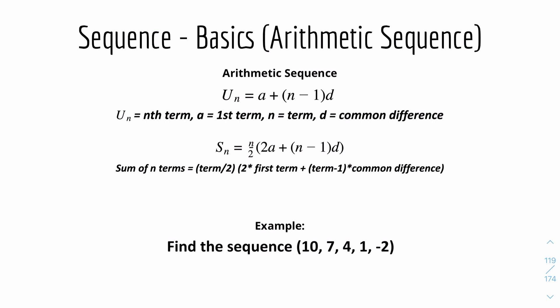For each sequence there's a u-subscript-n and an s-subscript-n. The u-n is basically the nth term — you're trying to find a specific term. The s, however, is basically the sum of the sequence. For an arithmetic sequence, the nth term formula is: u-n equals a plus (n minus 1) times D, where a is the first term, n is the term number, and D is the common difference. The sum formula is: S-n equals n over 2, times (2a plus (n minus 1) times D). Notice that the part a plus (n minus 1)D appears in both formulas.